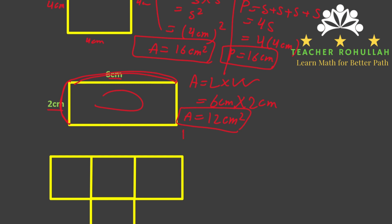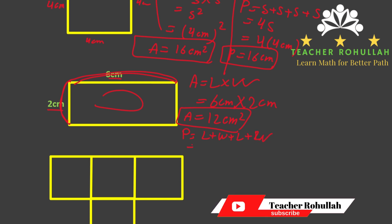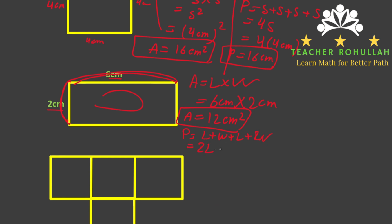The formula for the perimeter is P equals L plus W plus L plus W, which we can also write as two times L plus two times W. So two times six centimeters plus two times two centimeters gives us twelve centimeters plus four centimeters, which equals 16 centimeters. The perimeter of the rectangle is 16 centimeters.